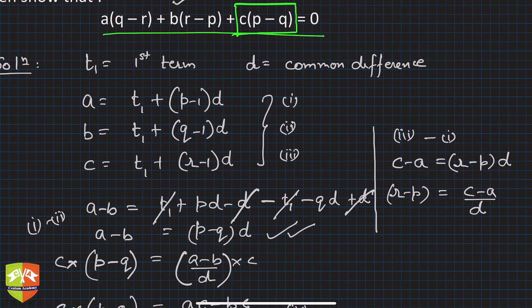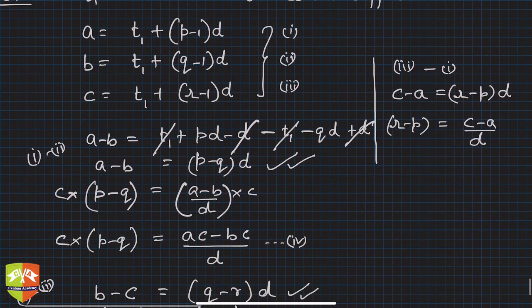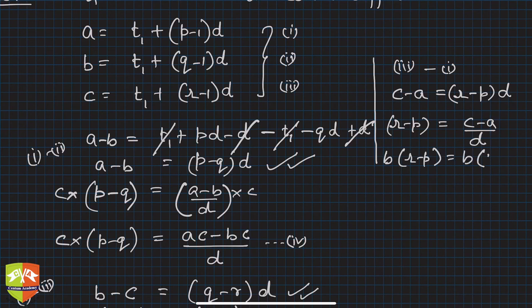If you check, b is here, so I want ab attached with it. So multiply both sides by b. You will get b(r-p) = b(c-a)/d. Fair enough, this is equation 6. Right, now look closely at 4, 5, and 6, and add all of them.